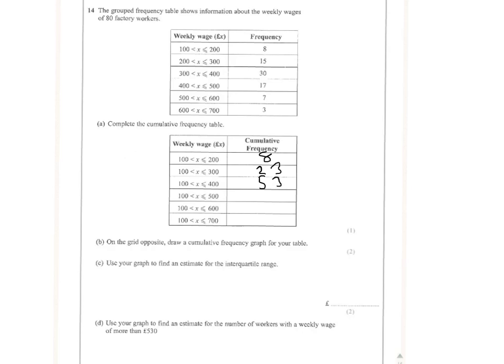Then we've got 17 more to add on to 53. That gives us 70, 77 and then 80. And that's the first part for one mark.